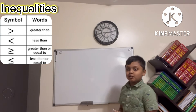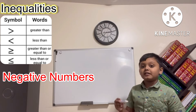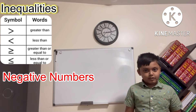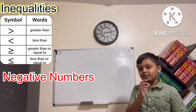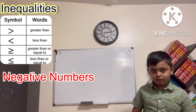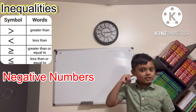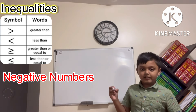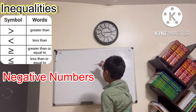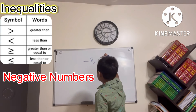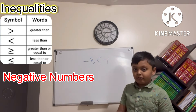Now let's do negative numbers. Negative numbers start before zero — there is no number before zero except negative numbers. Negative one starts before zero. The negative numbers are not bigger than positive numbers; among negative numbers, bigger negative numbers are actually smaller. So negative eight is less than negative one.